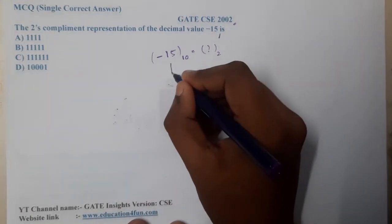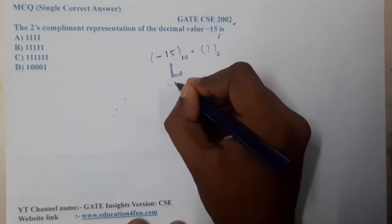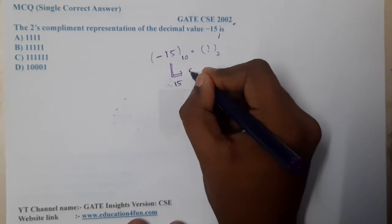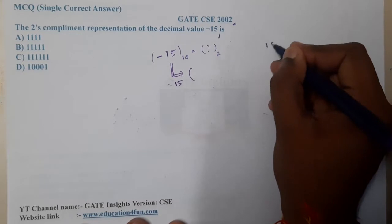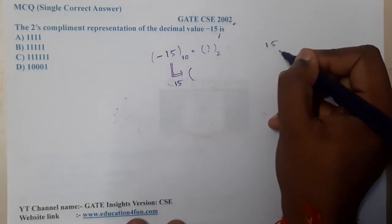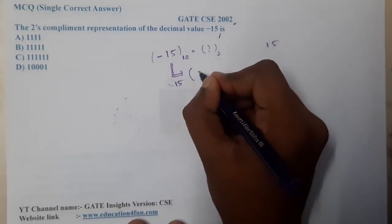If you recall, how can you write 15? So 15 is nothing but you don't need 16, but you need 8 plus 4 plus 2 plus 1.